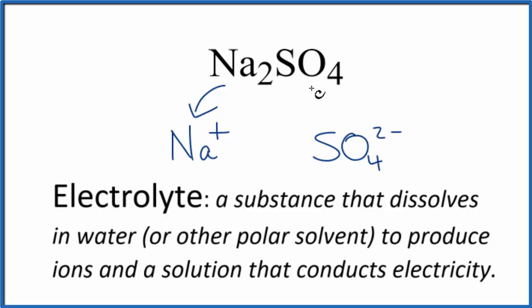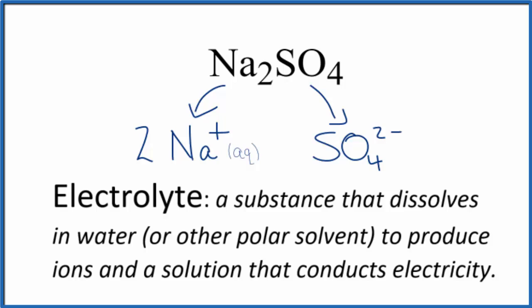It'll split apart, and because of this 2 in Na2SO4, we'll have 2 sodium ions. To show that this is dissolved in water, we put a little AQ after it.